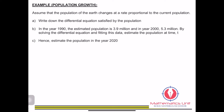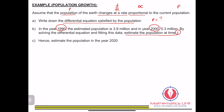The question says that the population of the earth changes at a rate proportional to the current population — this is our proportionality sign. We have to write down the differential equation satisfied by the population at time t, and estimate the population given data from 1990 and 2000, then estimate the population in 2020. From the first sentence, the rate of change of population is proportional to the current population.